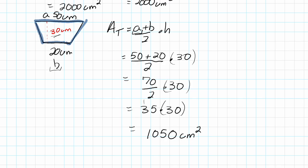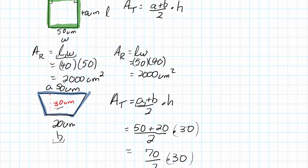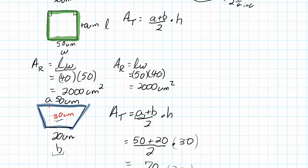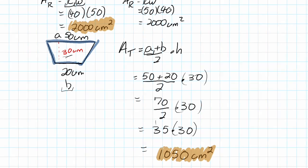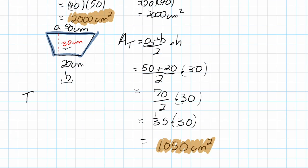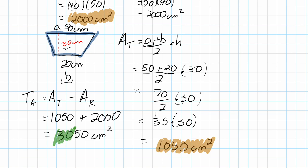We're not done though. What we've done is we found the area of two separate pieces. To find the total area, we take the area of the trapezoid and we have to add the area of the rectangle. 1,050 plus the area of the rectangle was 2,000. This will give you 3,050 centimeters squared. So this is actually our final answer. This is the piece that's most important.